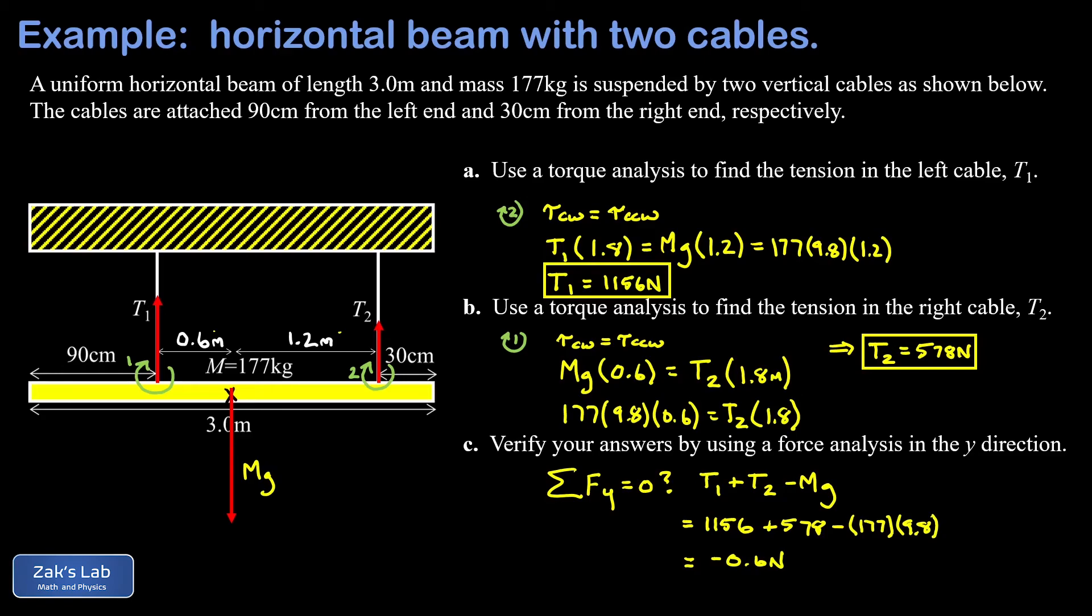When I run the numbers on this, I get negative 0.6 newtons. This number is a couple orders of magnitude less than the tensions themselves. I can understand it as a result of rounding error, and I can say this is approximately equal to zero, verifying that our tensions were computed correctly in the first two parts of the problem.